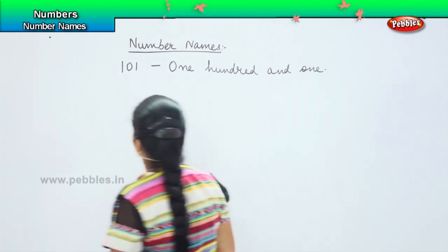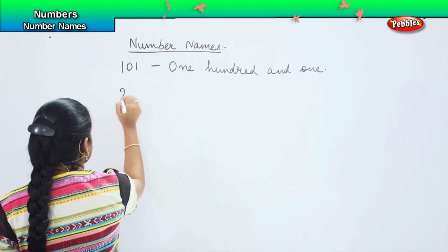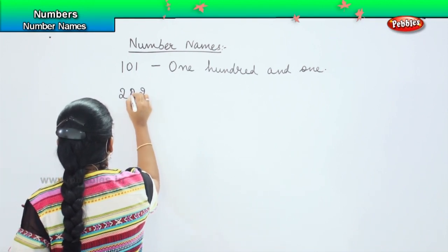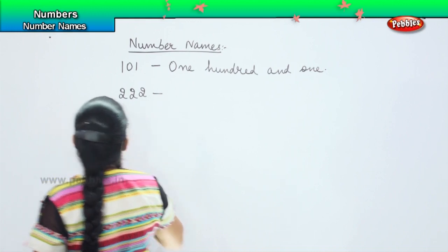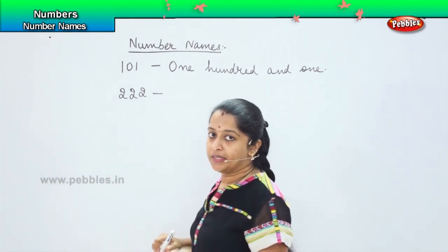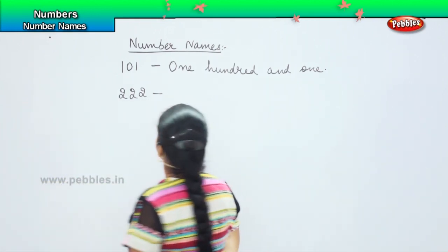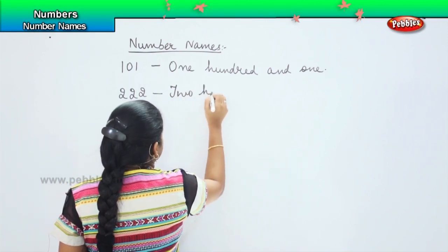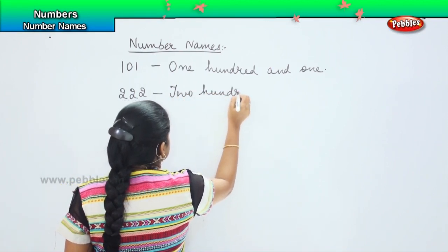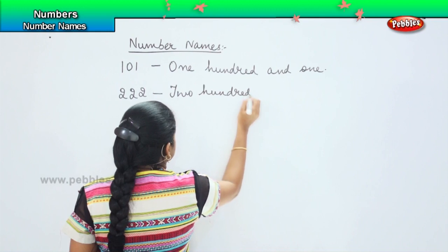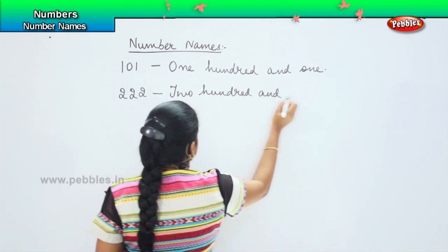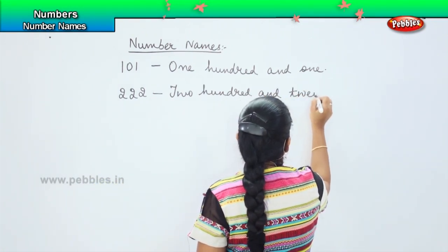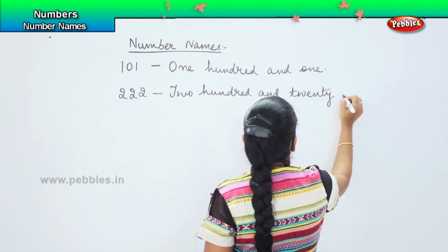For example, I give you another number: two, two, two. How will you express this? Can you tell me? Two hundred and twenty two.